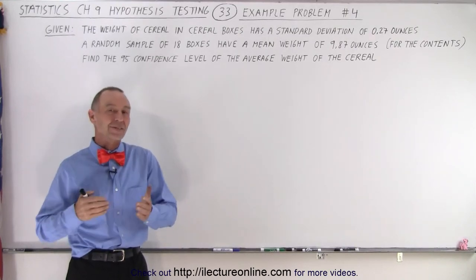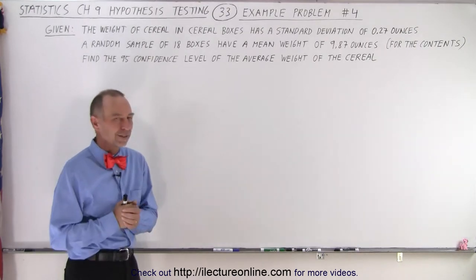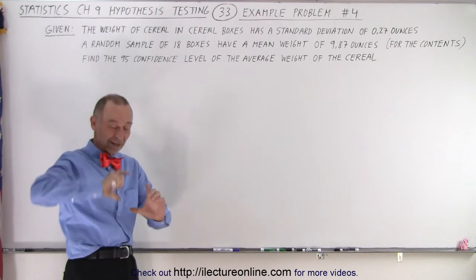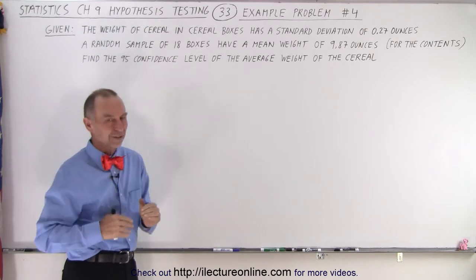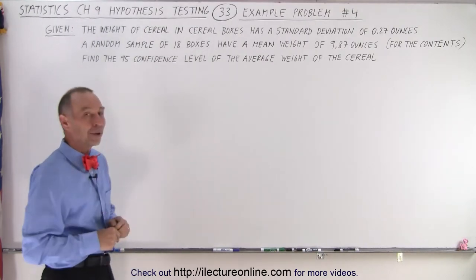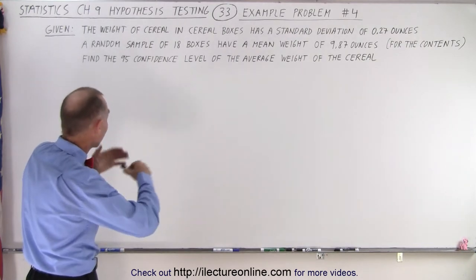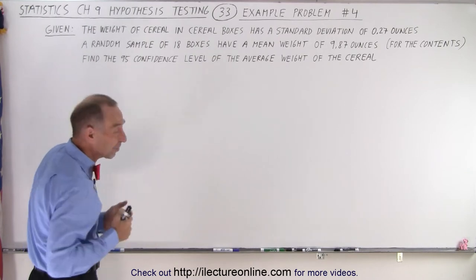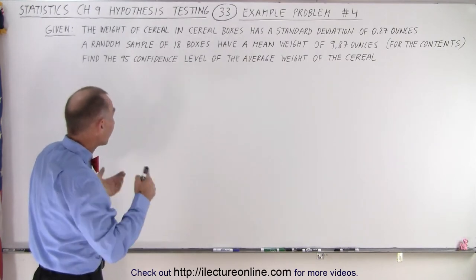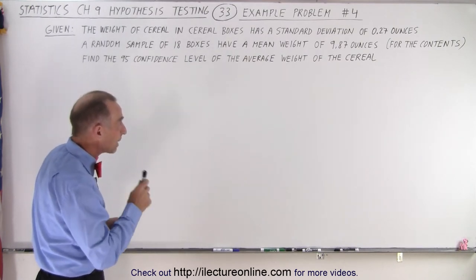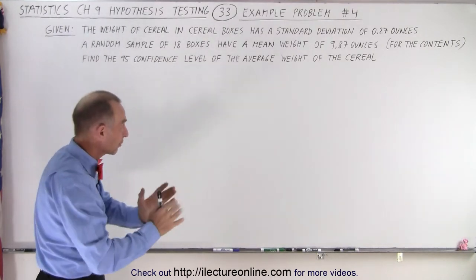Welcome to our lecture online. Here's our next example problem. It deals with cereal and cereal boxes, which is always an interesting one. You buy these big boxes and they just have a little bit of cereal in them. The manufacturer always claims that the boxes shake back and forth and the cereal settles down. The manufacturer claims that the standard deviation of the weight of cereal in those boxes is 0.27 ounces.